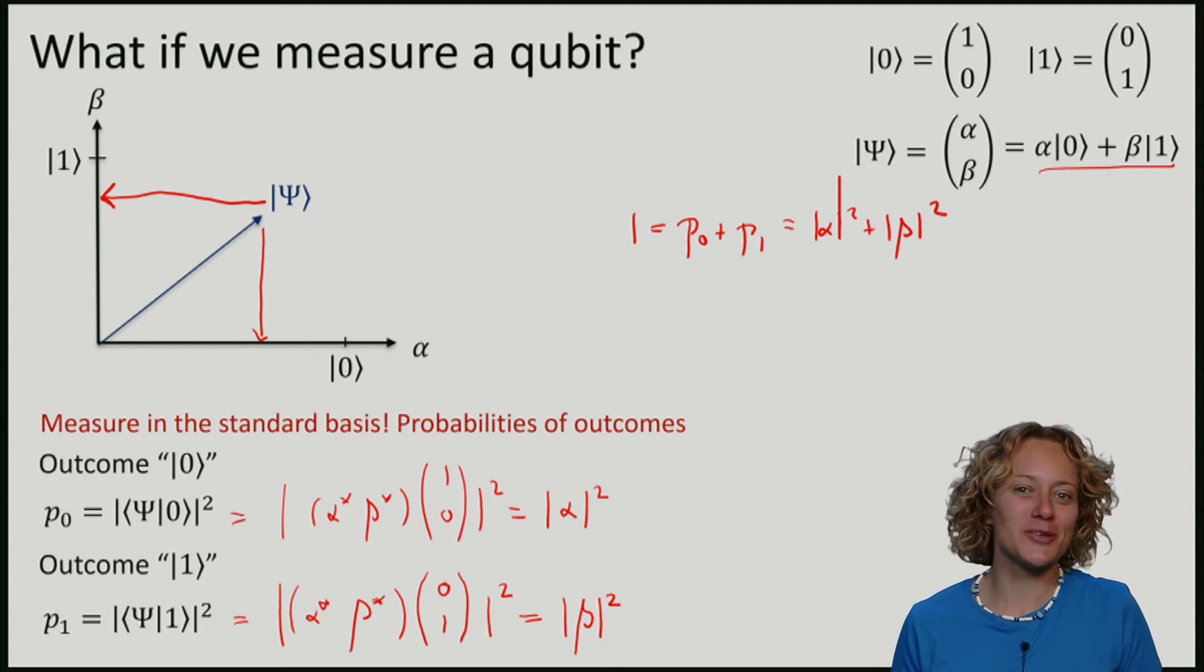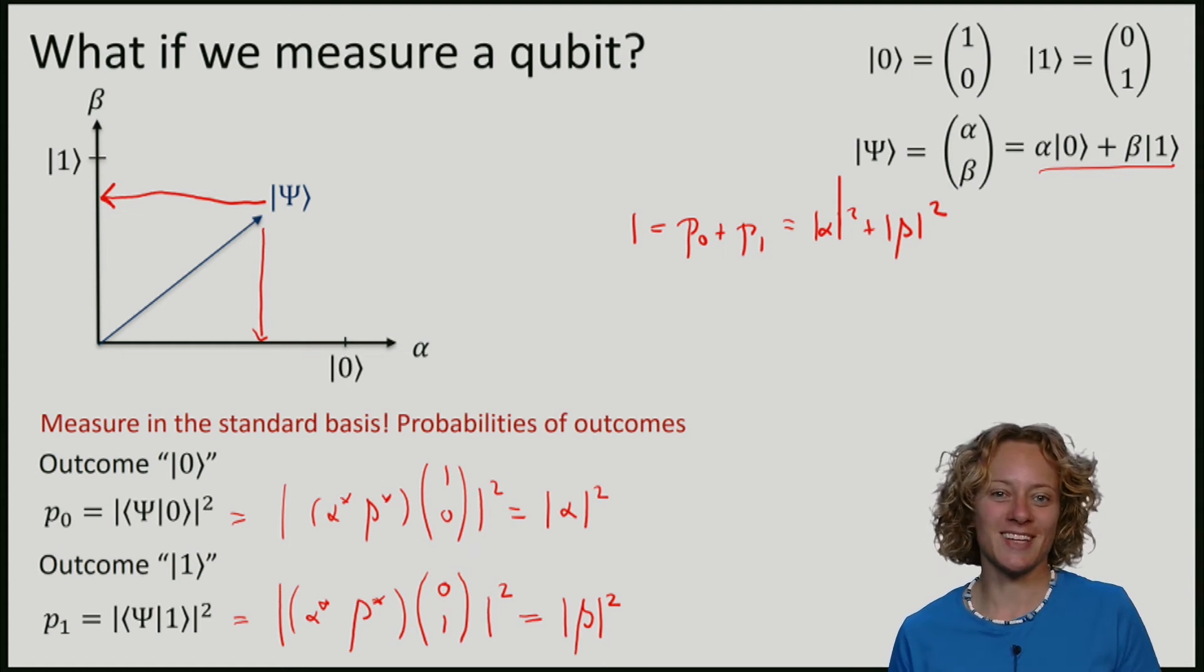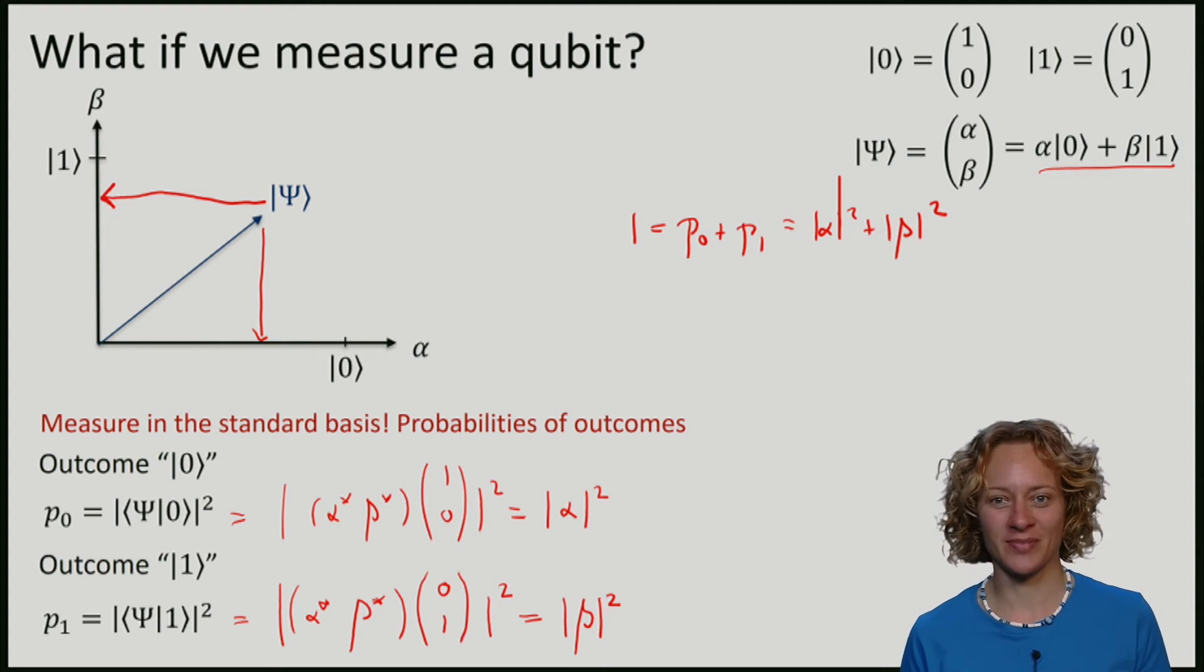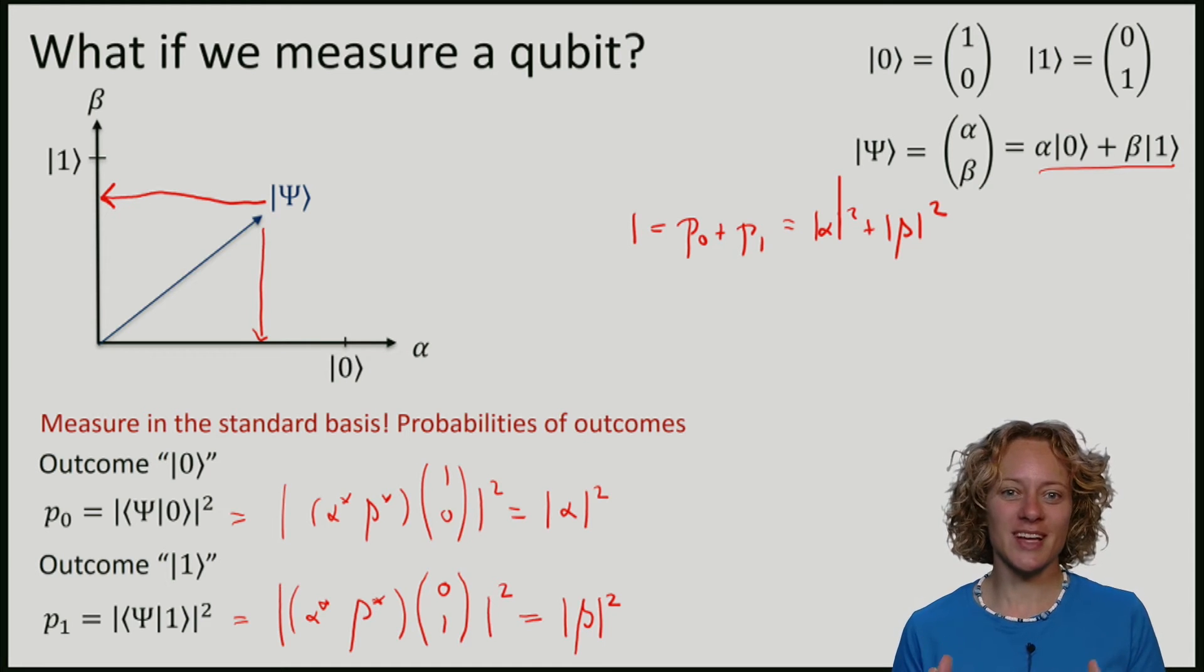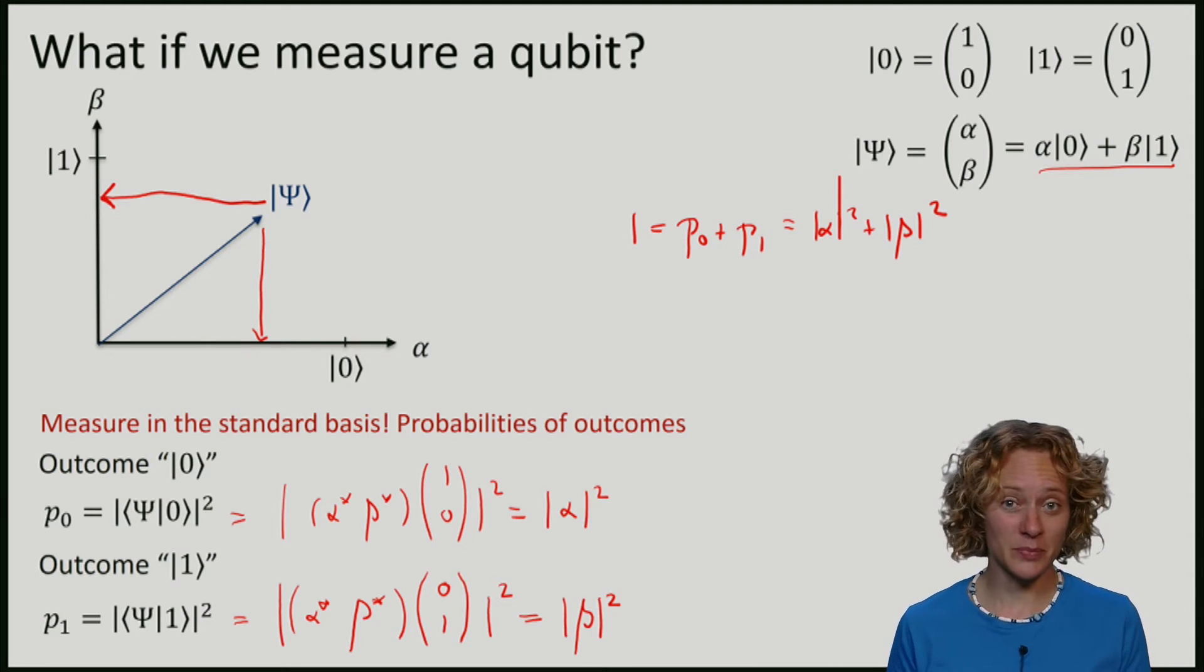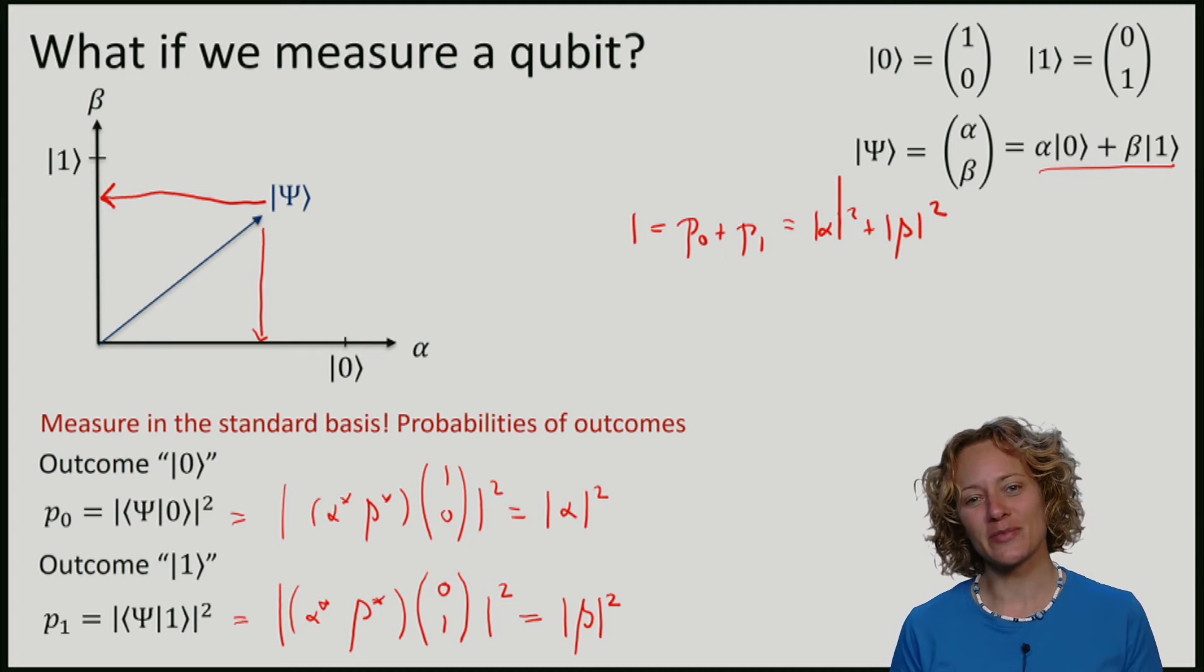We now see that there was also a very good reason why we had taken qubits to be normalized vectors of length 1. Because this precisely means that if we measure it, here in the standard basis, the sum of probability adds up to 1 as it should.